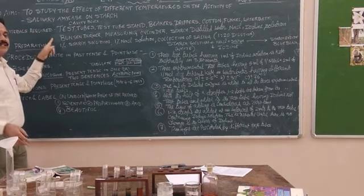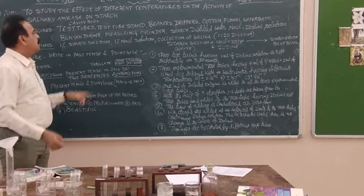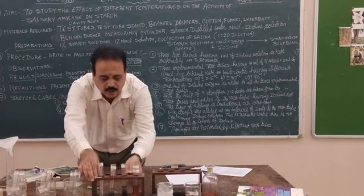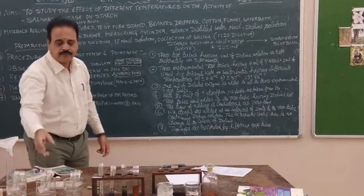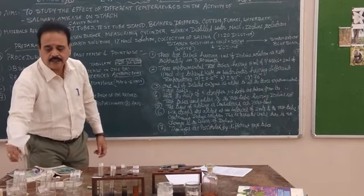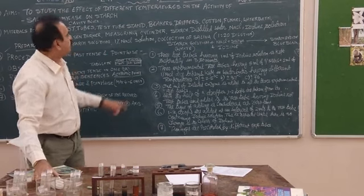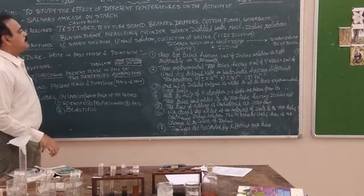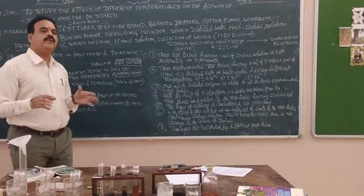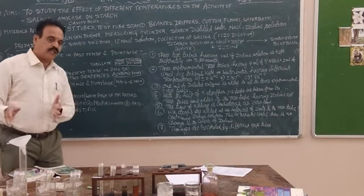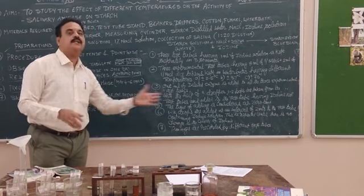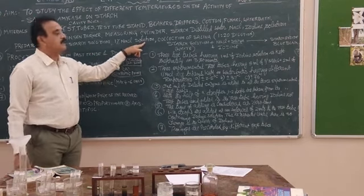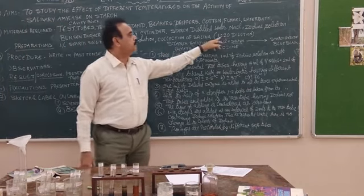Second, materials required. To perform this experiment we need: test tubes, a test tube stand, test tube holders, beakers, a flask, a measuring cylinder, cotton, and of course we have taken chemicals from the lab — this is called a cavity block, used for this experiment. The chemicals we require: we need to prepare solutions beforehand. We prepared all the solutions yesterday. The solutions are: 1% starch solution, 1% NaCl solution, and of course saliva — diluted in the ratio of 1:2.